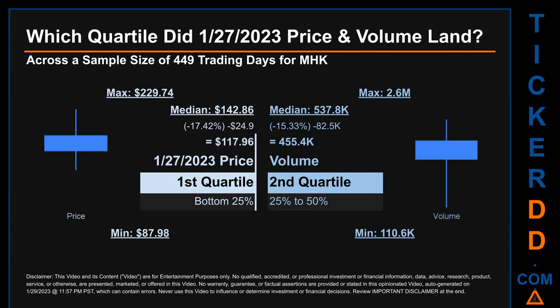Hello, my name is Maria. Which quartile did January 27, 2023 price and volume land? Across a sample size of 449 trading days, the maximum end-of-day price for MHK was $229.74 while the minimum was $87.98. Within that price range, January 27, 2023's price of $117.96 landed within the first quartile, meaning it was within the bottom 25% of all sampled end-of-day prices.